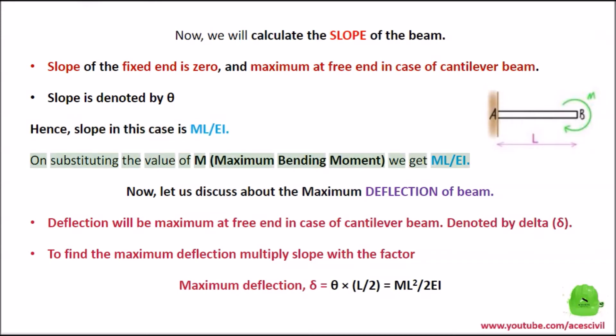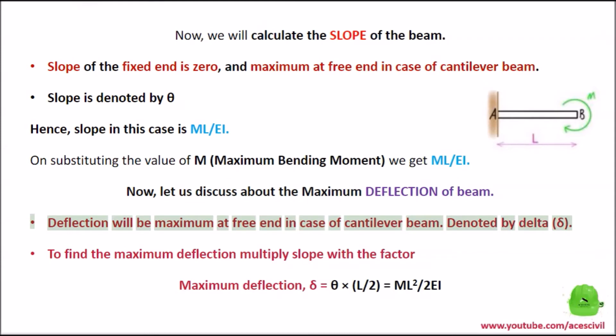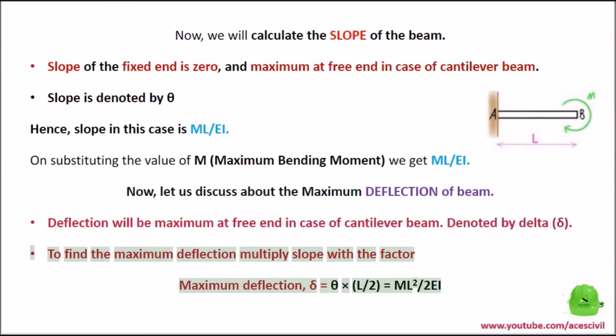Slope in this case is ML / EI. On substituting the value of M (maximum bending moment), we get ML / EI. Now, the maximum deflection of the beam occurs at the free end in the case of a cantilever beam, denoted by δ (D). To find the maximum deflection, multiply slope with the factor: maximum deflection D = θ × (L / 2) = ML² / 2EI.